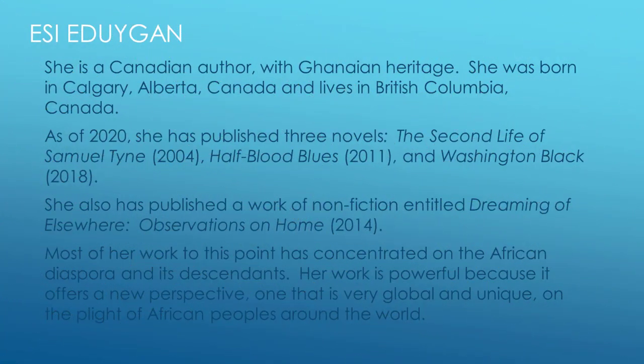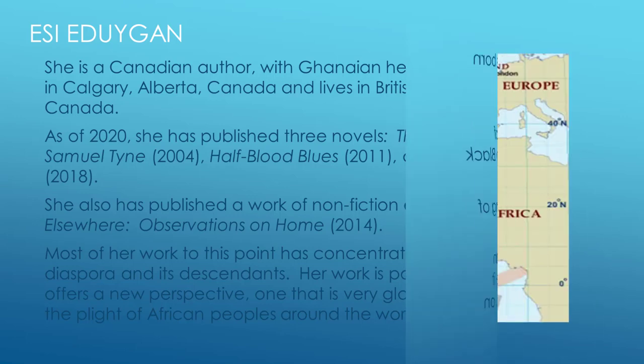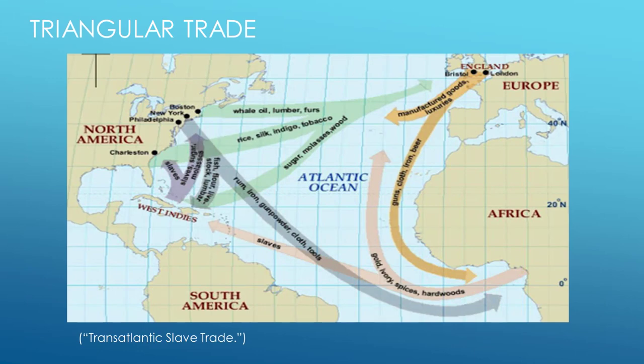Washington Black starts out in Barbados. This presentation, though, will not cover much of Barbadian history as it pertains to slavery. For more information on slavery in Barbados, please watch my video on George Lamming's In the Castle of My Skin. Washington Black reinvents the infamous triangular trade, or triangle trade, that dominated the Atlantic basin from around the 1500s to the 1800s. The novel fictionally reverses the flow of people and goods leaving the Caribbean and traveling to Europe and eventually Africa.